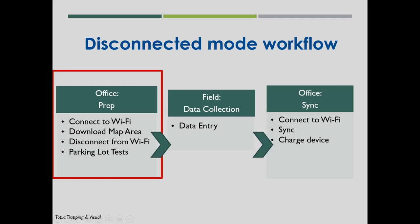A huge part of the disconnected workflow is the office prep. While connected to a reliable Wi-Fi connection, download a map area to your device. Once that's done, you can disconnect from Wi-Fi and collect data in the field. I recommend doing a parking lot test — open the app, make sure it's behaving correctly — before heading out.